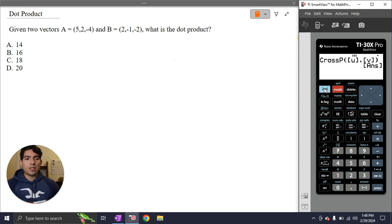But the only difference is this time, you would go second, vector, and when you go to the math tab, you would select the dot product instead of the cross product.